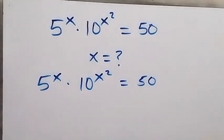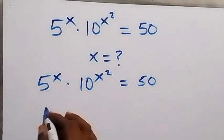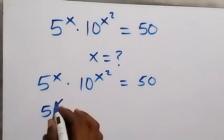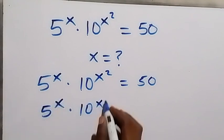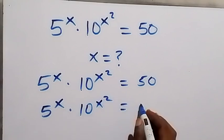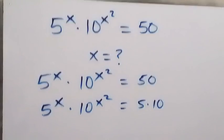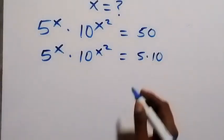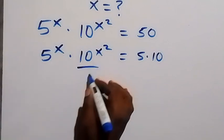From here we can rewrite this and separate 50. This becomes 5 raised to power x, times 10 raised to power x squared, equals 5 multiplied by 10. Since 5 times 10 is the same thing as 50.